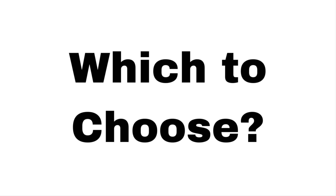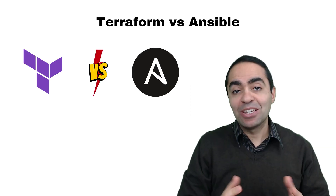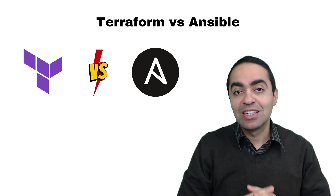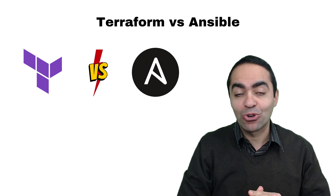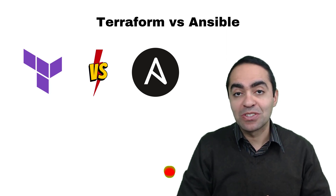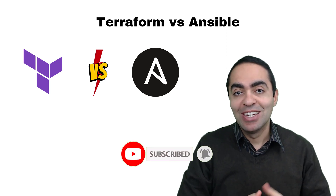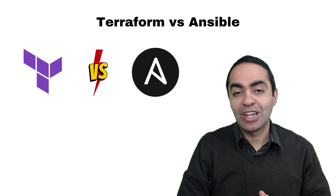In general, you would use Terraform to create and manage your infrastructure resources, and then use Ansible to configure and manage those resources once they are up and running. It is also possible to use both tools together — Terraform sets up the infrastructure and passes information about the created resources to Ansible for further configuration. Look out for the next video where I demo both Ansible and Terraform in AWS launching an EC2 instance, comparing the differences, what to look out for, and what I mean by state files and keeping the state of the infrastructure.